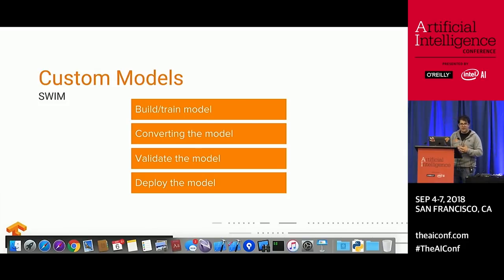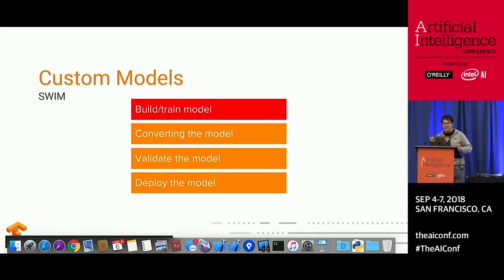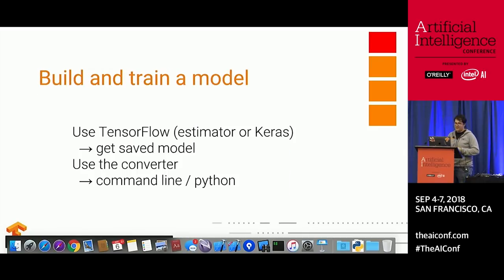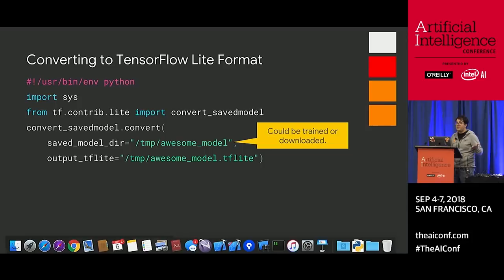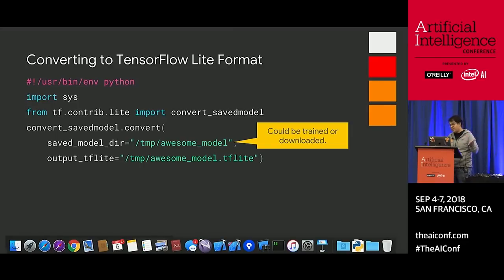Now let's get into full-on swimming — there are basically four steps. The first is building and training the model, which you could do with Swift or Python. The second is converting the model. The conversion can be invoked in Python: give it a saved model in, get a TF Lite flat buffer out. I recommend always converting as part of your training script so you can make sure it's convertible from the start.